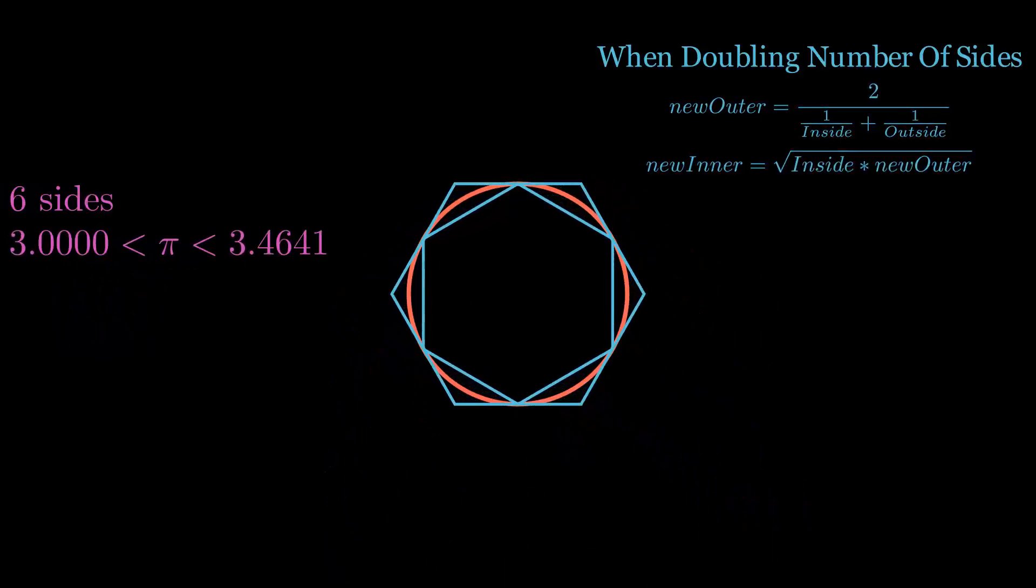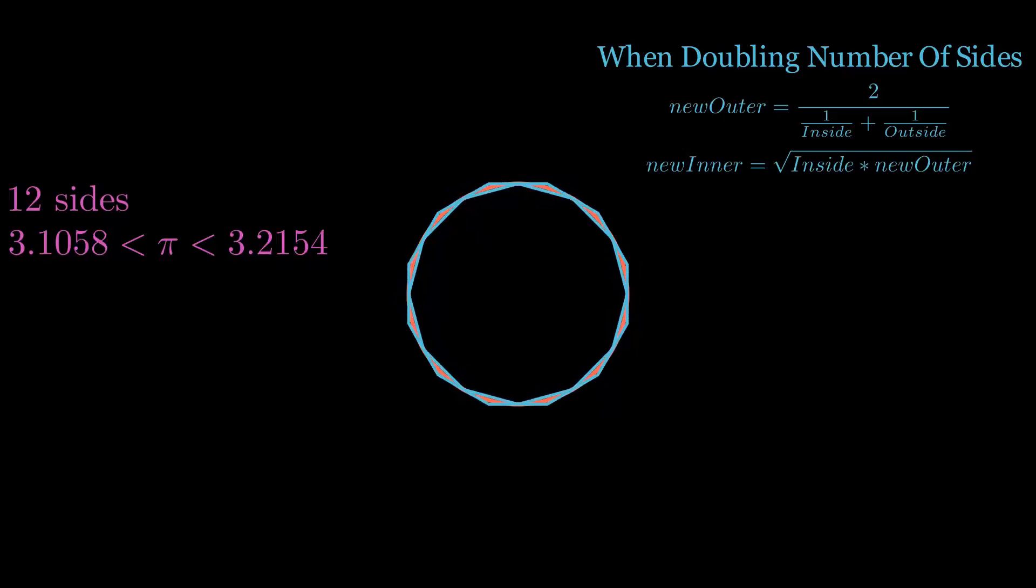What he did was use trigonometry to figure out the formula for inner and outer shapes when he doubled the number of sides. So he started with a 6-sided approximation and then used these equations to get the perimeters to 12-sided shapes.